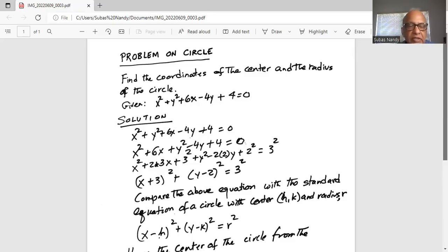So we can write x squared plus 2 times 3x using the formula a plus b squared is equal to a squared plus 2ab plus b squared.